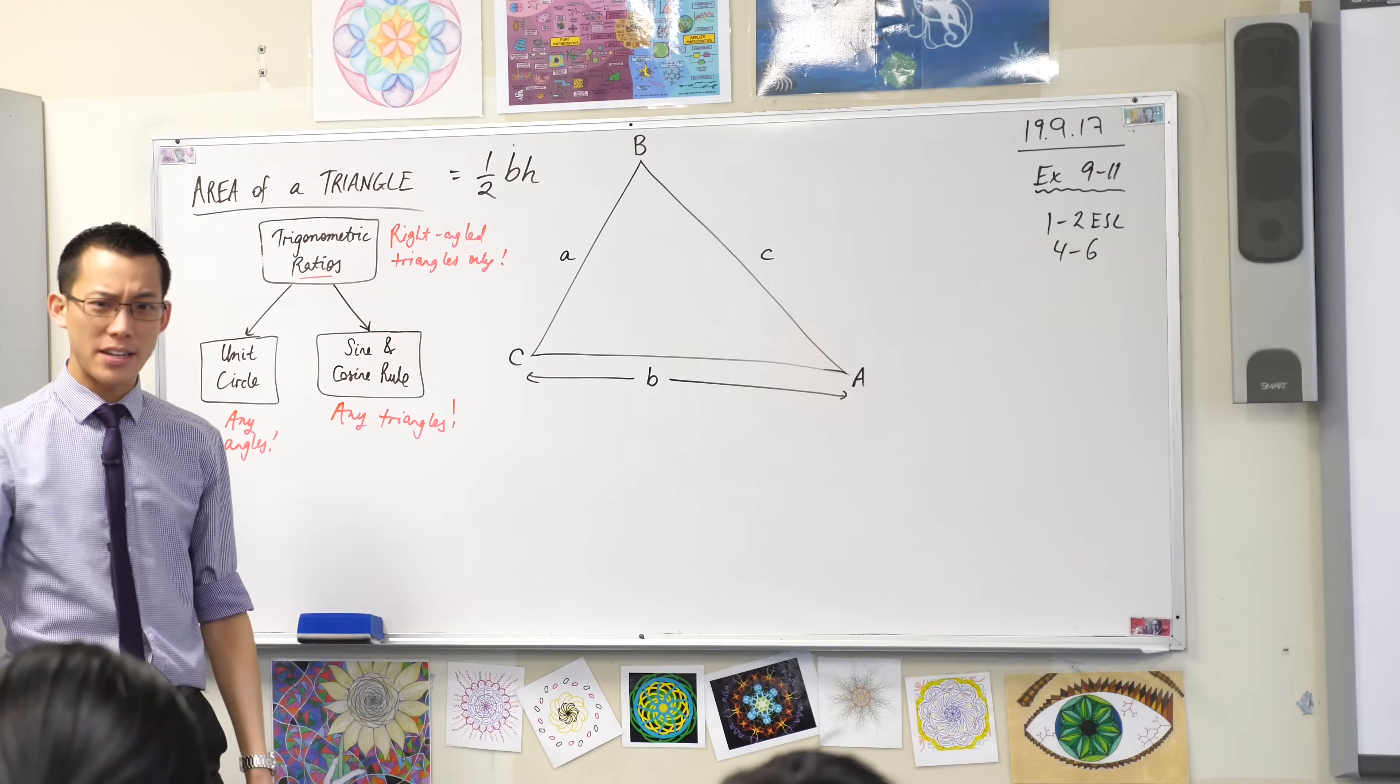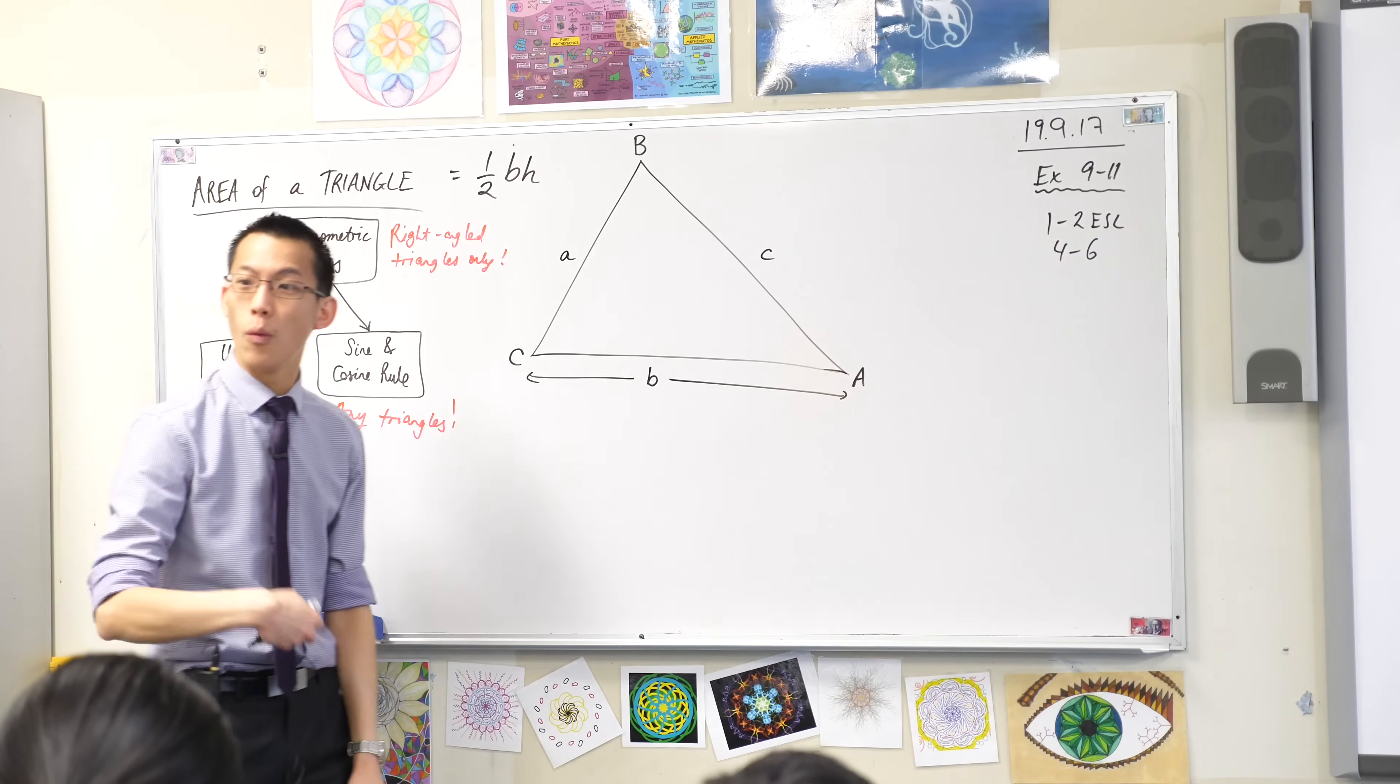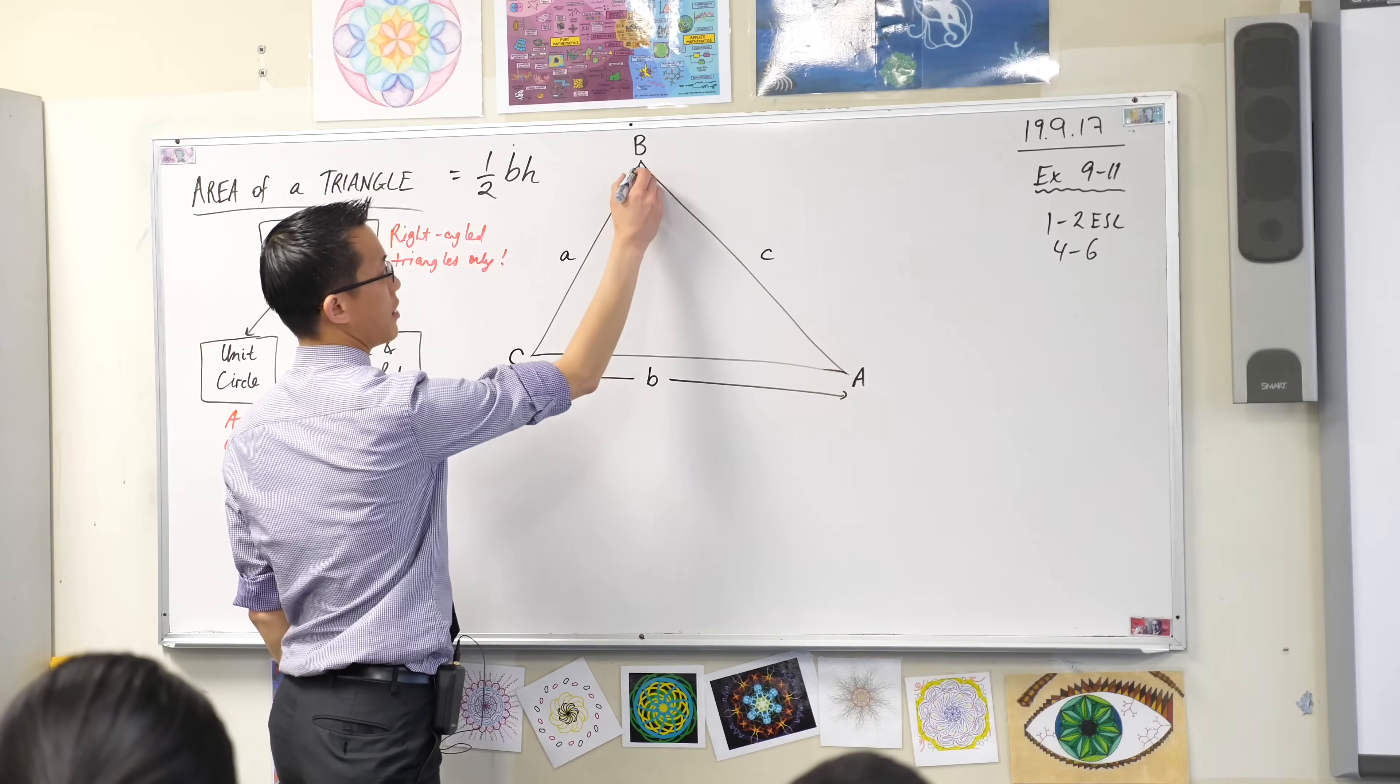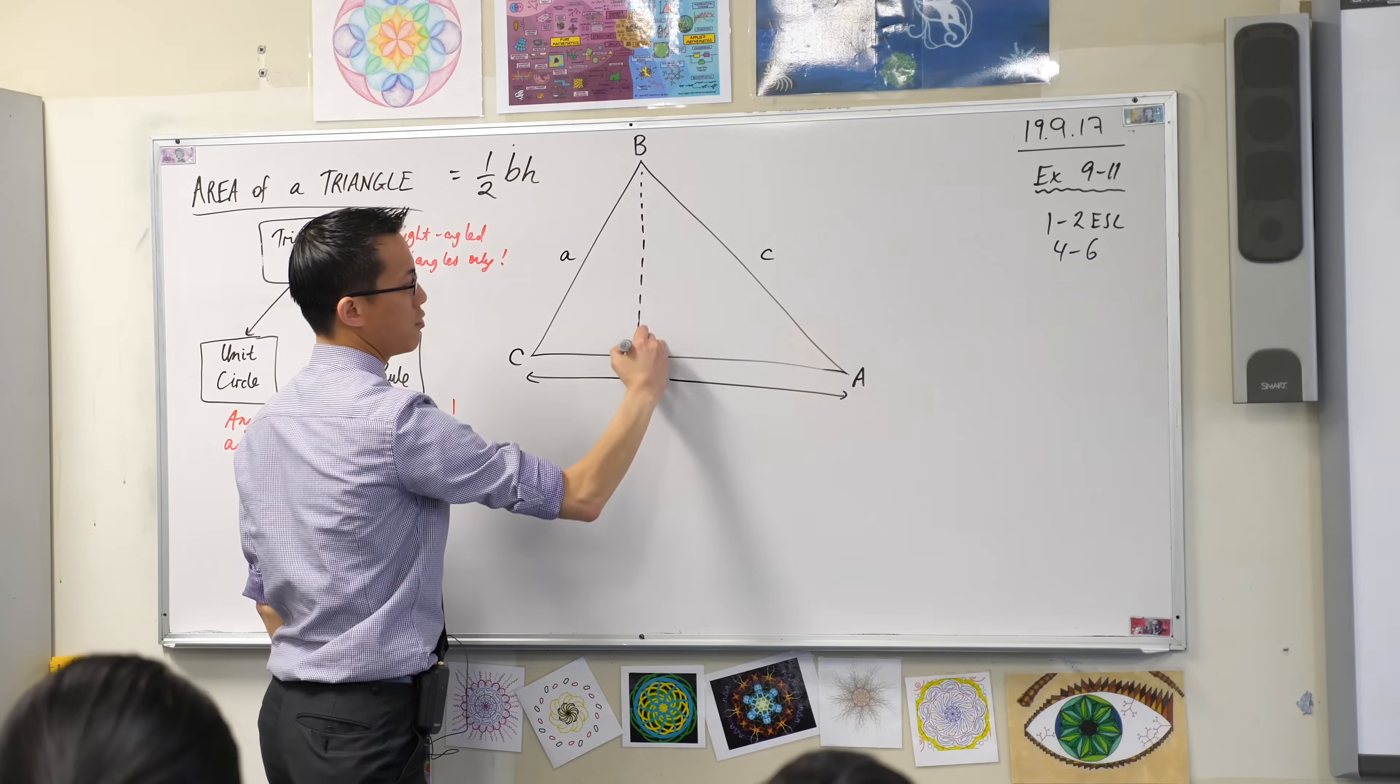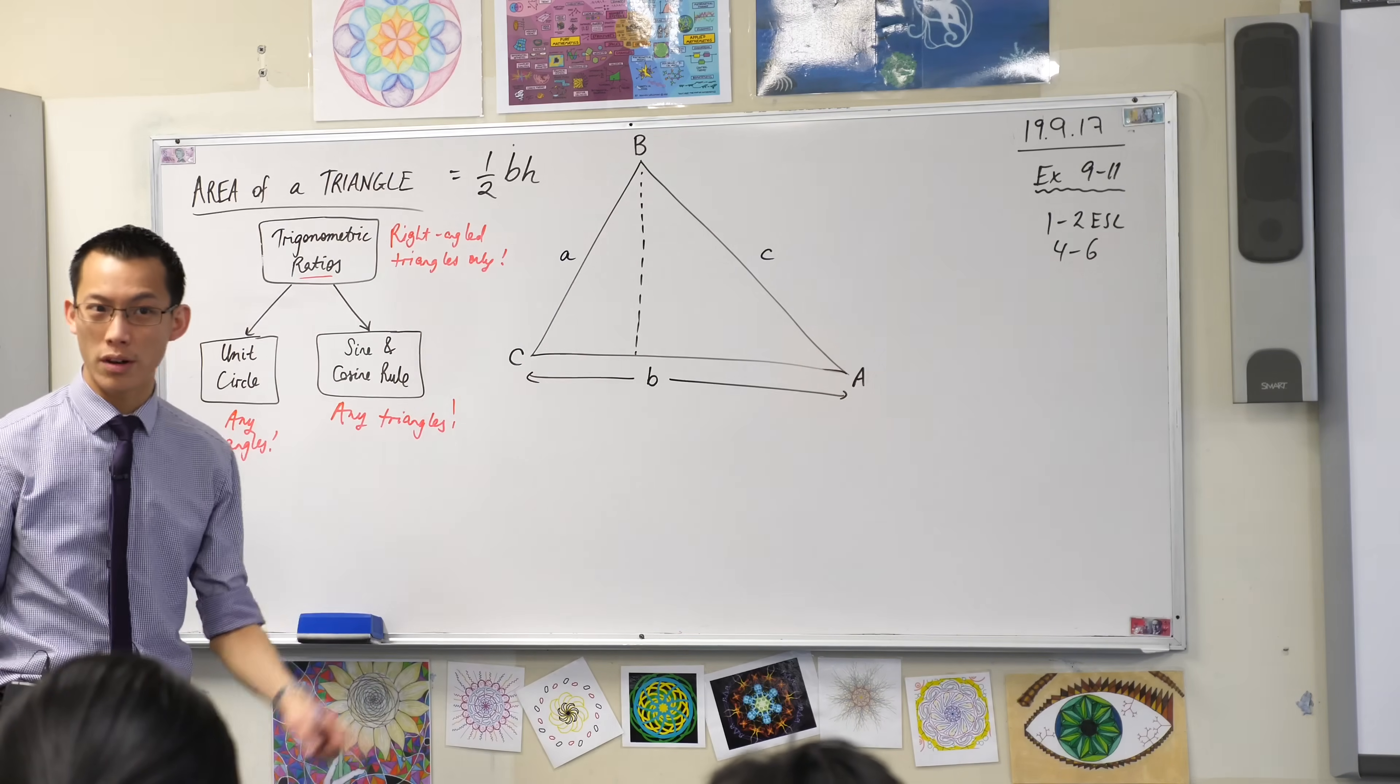So if I wanted the perpendicular height, because I kind of need that for area at the moment, where would I put it? It's somewhere like here. So can you draw yourself one of these lines? By the way, if there's a right angle there at the bottom,